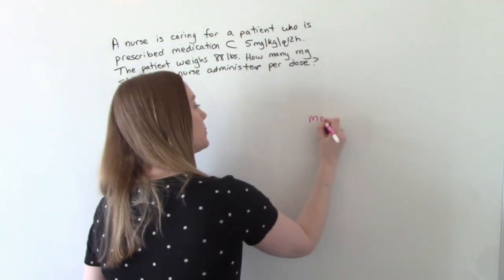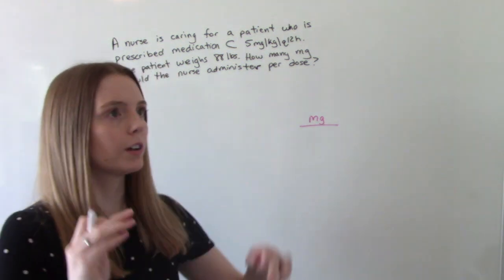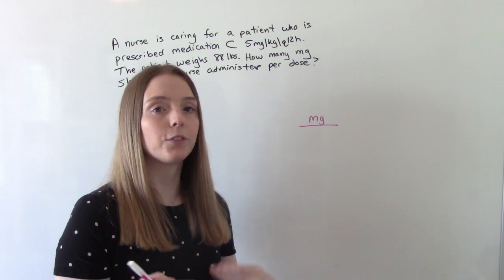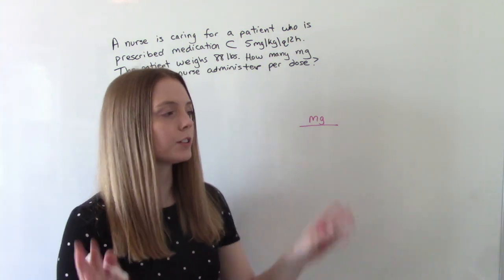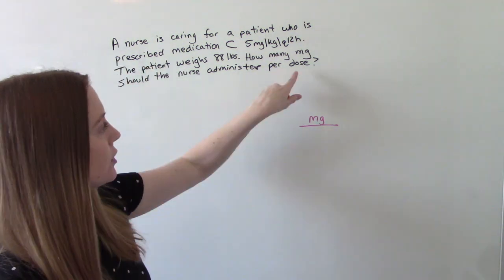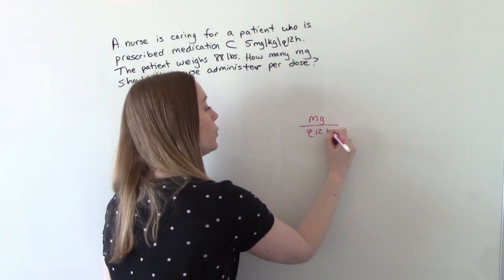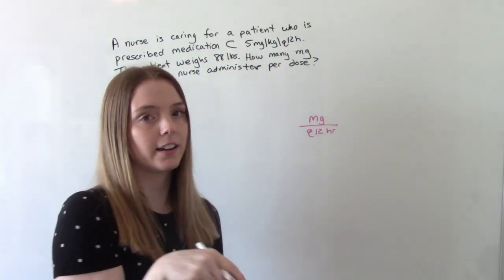So we're looking for milligrams per dose. Now the dose part is just kind of implied. You don't actually have to write it, but if you want to, to help yourself out, you can do that. So in this case, the dose is every 12 hours. So if you want to put this in, you can, you don't have to.